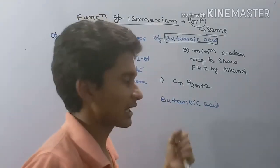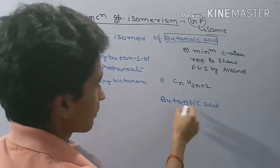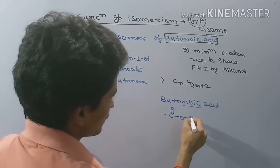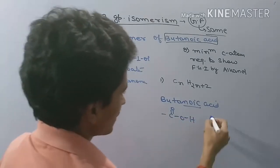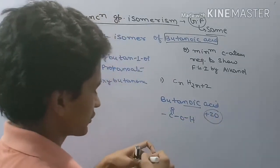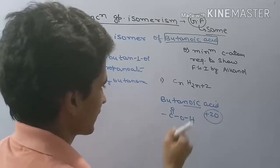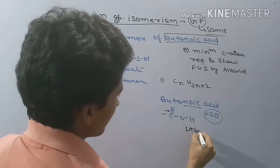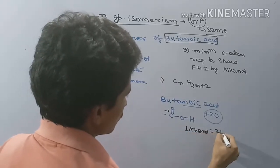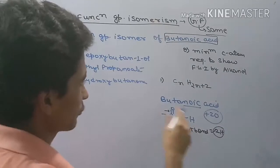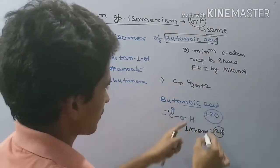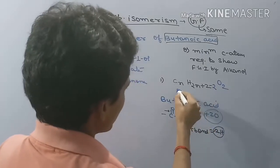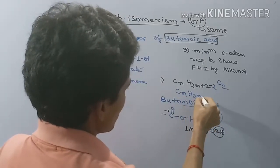Let me write the general formula. For a carboxylic acid, we have two oxygen atoms. The number of hydrogens — considering the oxygen coefficient — gives us: CₙH₂ₙO₂. So butanoic acid's general formula is CₙH₂ₙO₂.